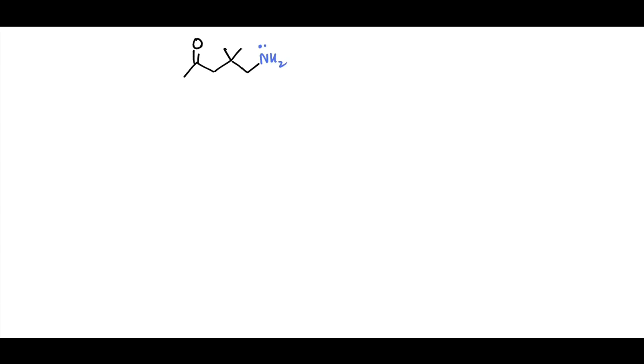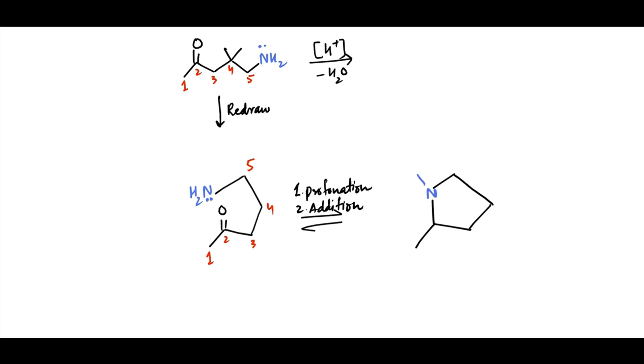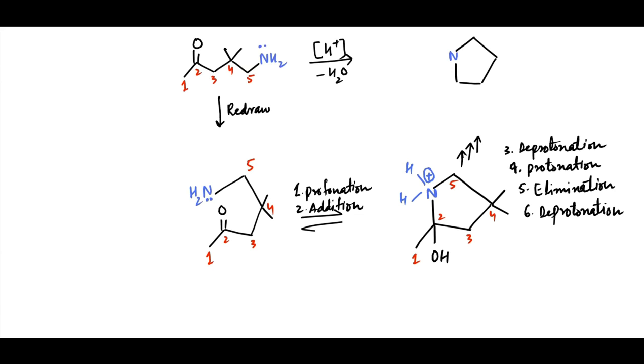This ketone also contains an amino group. Therefore in the presence of acid catalyst, it will undergo intramolecular cyclic imine formation. To understand the mechanism, denote the carbons as C1, 2, 3, 4, 5, and redraw the molecule so that keto group and amino group are shown close to each other. The intramolecular reaction shall follow the same sequence of steps as described earlier for intramolecular imine formation. The protonation of carbonyl and addition of NH2 will form this intermediate, wherein nitrogen attains positive charge. This is followed by deprotonation, protonation of OH, elimination of H2O and deprotonation of nitrogen to form this cyclic imine.